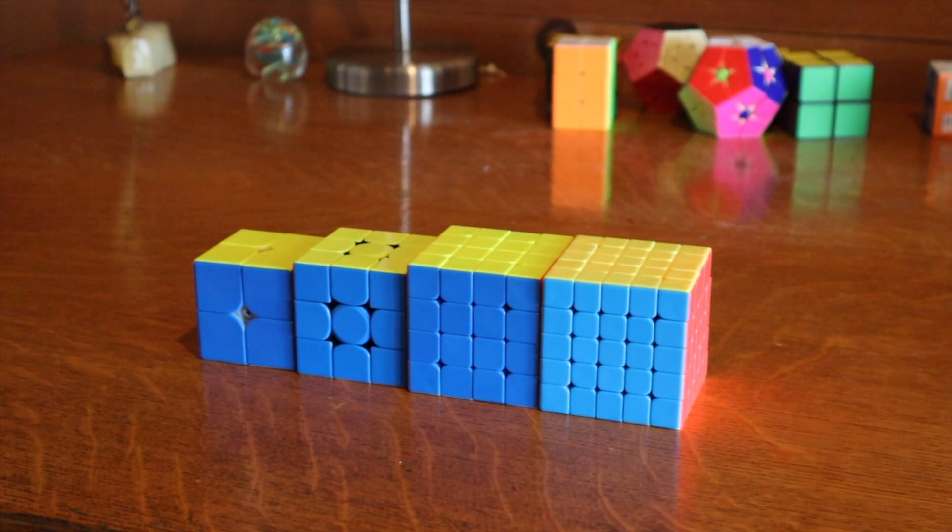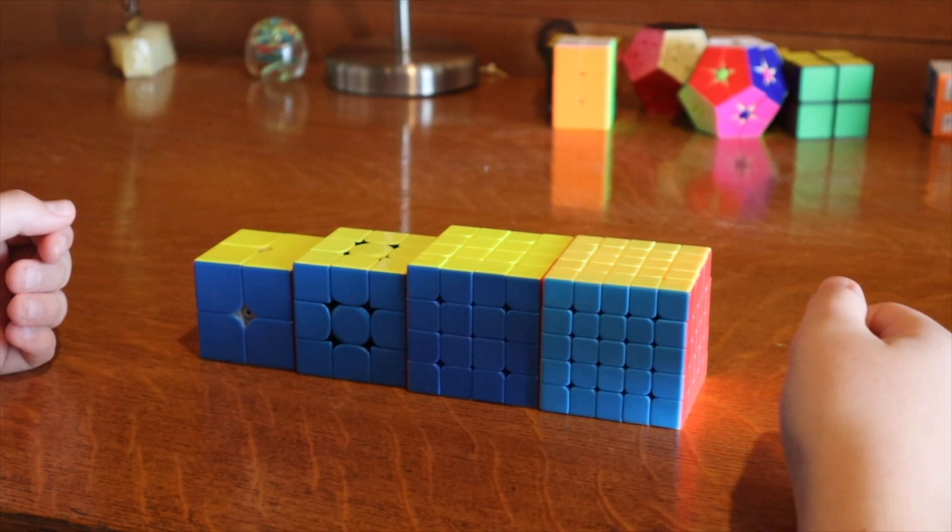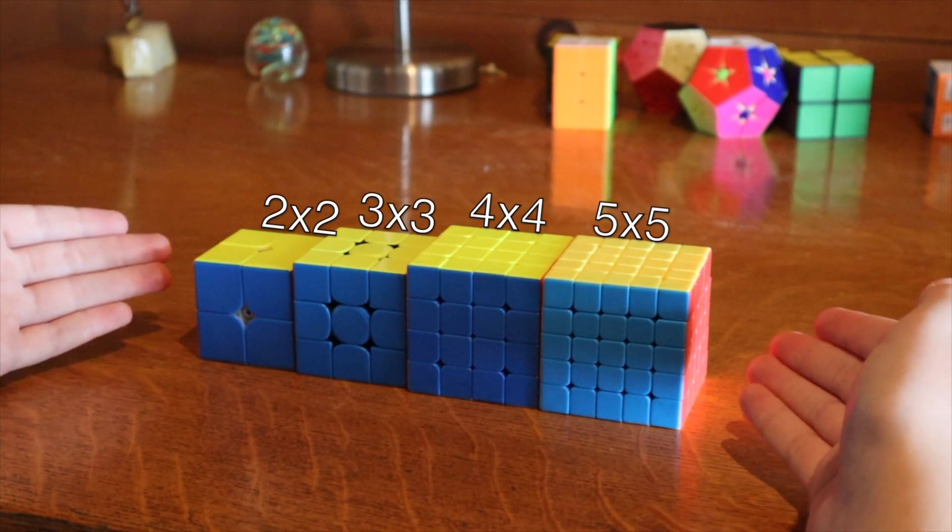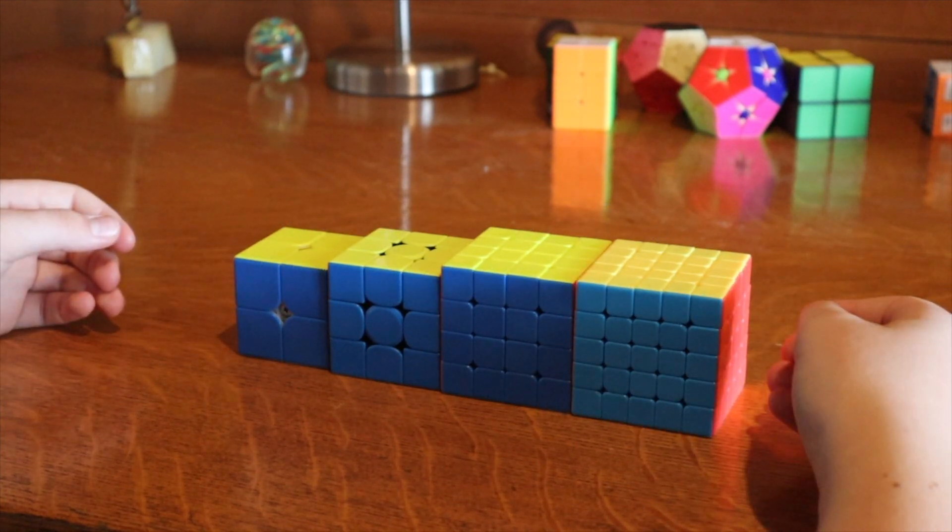Notation is a bunch of letters that form an algorithm which can be used to help solve a Rubik's Cube. Today I'll be showing you notation for 2x2 through 5x5 puzzles. You need to know Rubik's Cube notation if you want to solve or apply patterns to your cube.